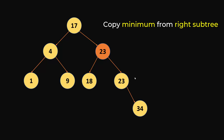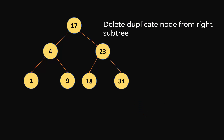Why do we take the minimum value from the right subtree? If you take the minimum value from the right subtree and move it here, you are guaranteeing that all the elements remaining in the right subtree are going to be greater than this root node. All elements on the right subtree are still going to be greater than this node if this node was the minimum of the right subtree. That is the reason we choose the minimum value, and then we delete the duplicate node.